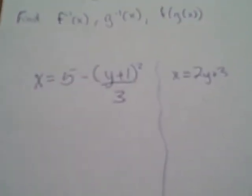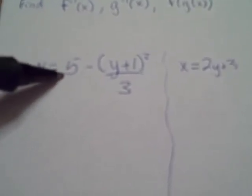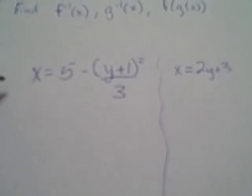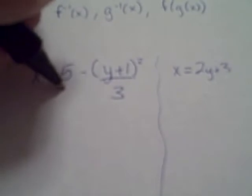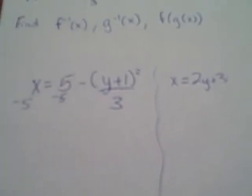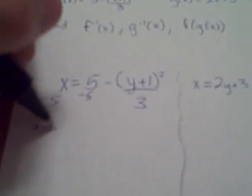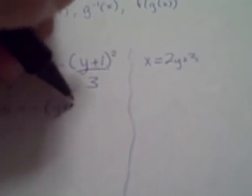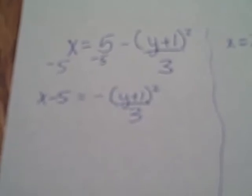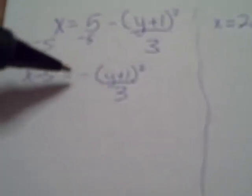First things first here, five's kind of hanging out by itself so why don't we bring him over, minus 5 minus 5. So x minus 5 equals negative y plus 1 squared divided by 3. Now I don't necessarily like this negative out in front here, at least of the y, because that's what I'm trying to get. So if I multiply everything by negative 1, that'll kind of fix that problem right away.